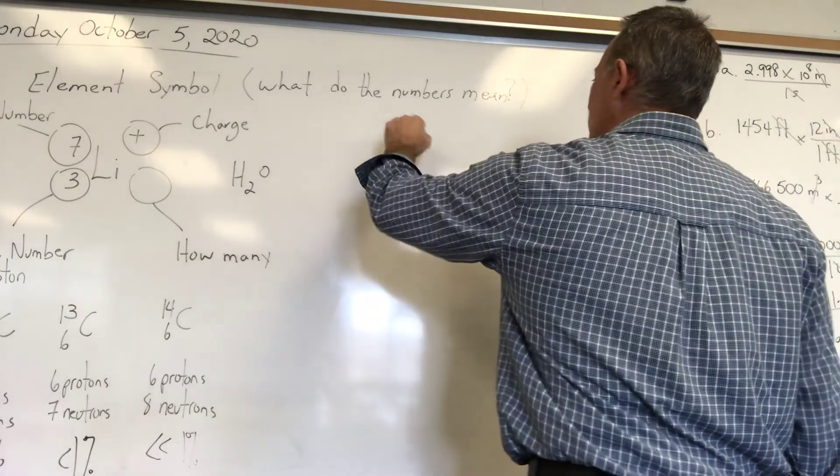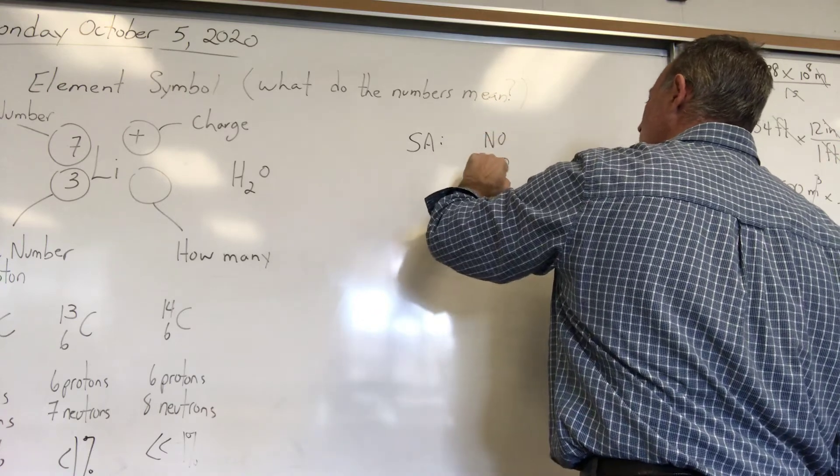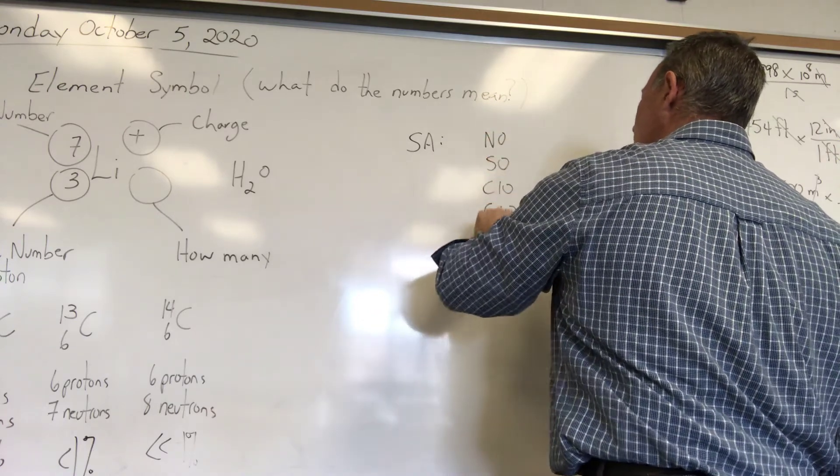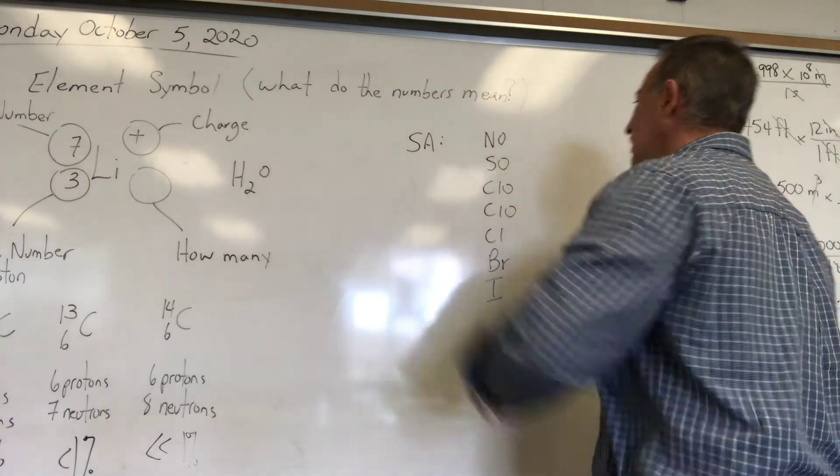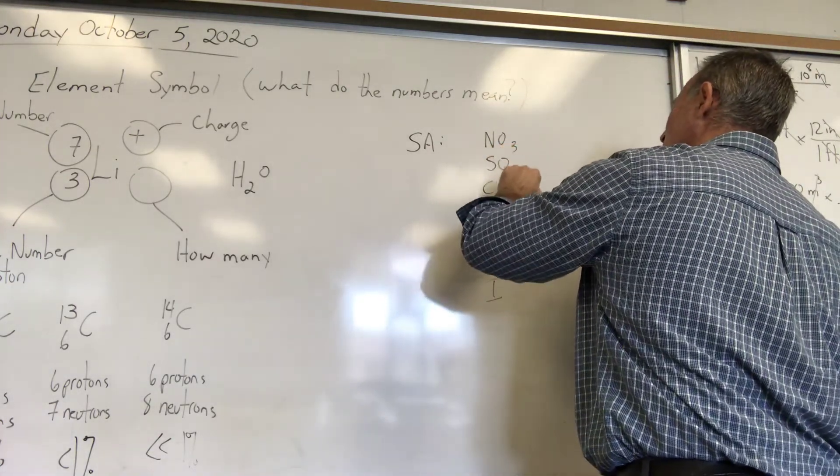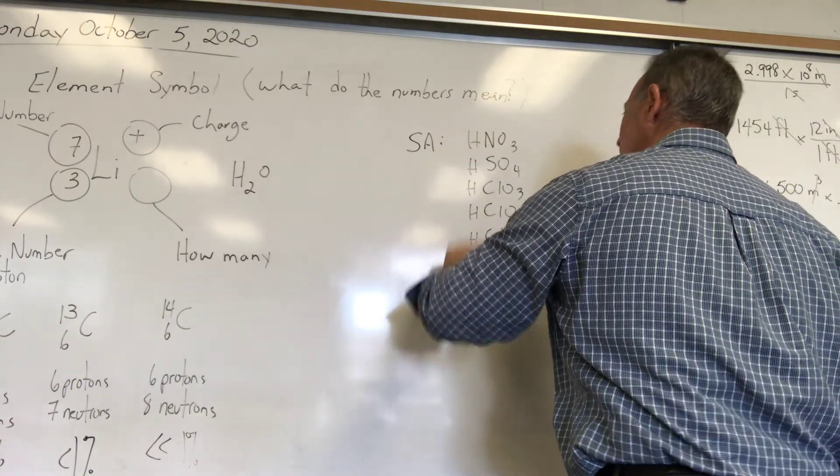For the strong acids, what you do is you set up: No So Claw Claw Cold Bri. No So Claw Claw Cold Bri—sounds silly, but it's easy to remember. Then you write 3, 4, 3, 4, and you put a bunch of Hs, and on the second one you put two Hs.